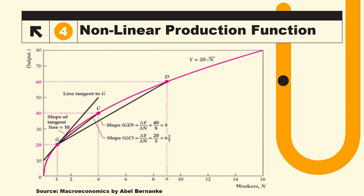So if you join this point G with point D with a straight line, this black line, we are joining point G with D. So the slope of this straight line will give you the average rate of change in Y due to change in N.